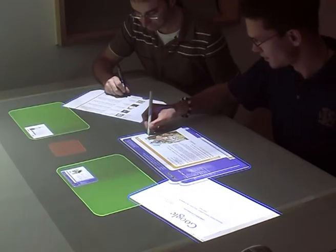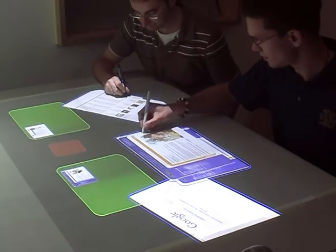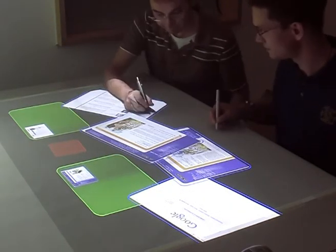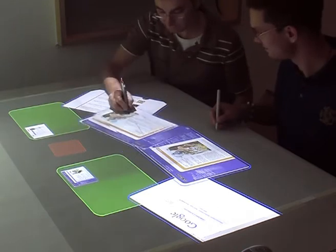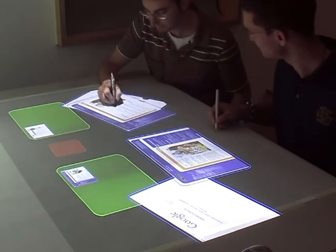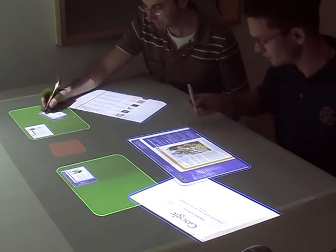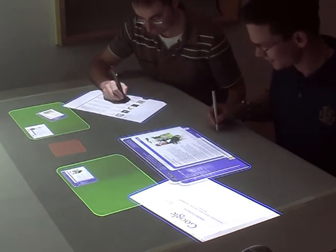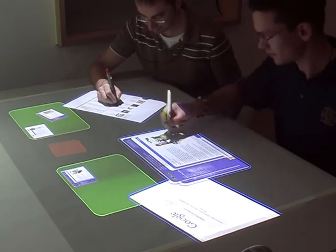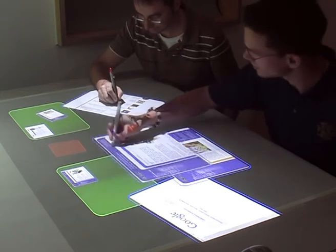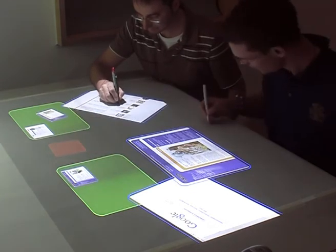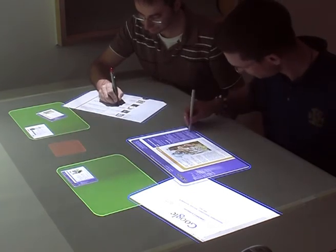Dragging with the stylus moves pages around the table. They can be shared with others sat at the table. Pages of interest can be arranged in the green piles in the table centre, and pages can be closed by dragging to the red recycle bin.